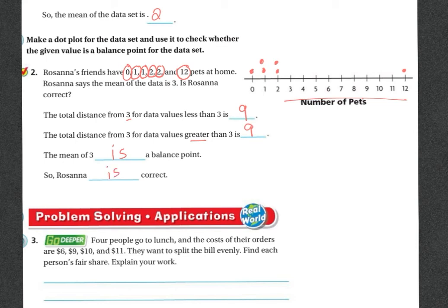So Rosanna is correct, 3 is the mean of the data.